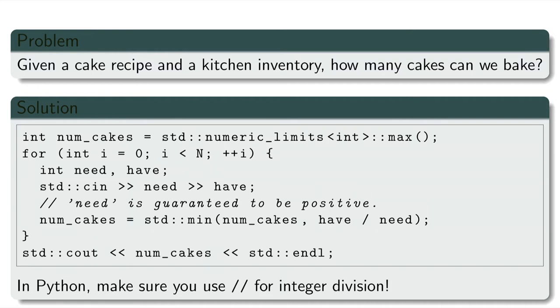Here is the C++ solution. We first initialize a numCakes variable to a high value. Then we go over each ingredient, compute how many cakes we would be able to bake assuming that this ingredient is a limiting factor, and then update the numCakes variable with a minimum.